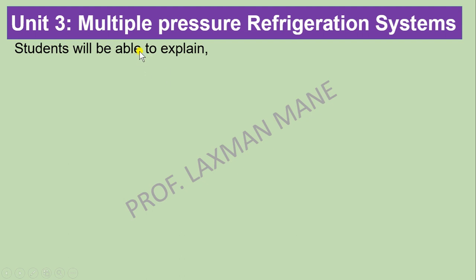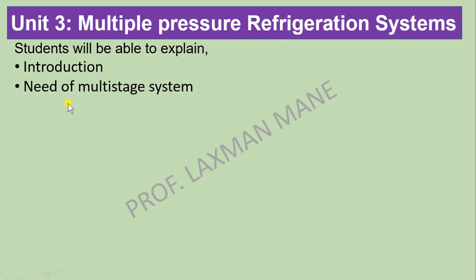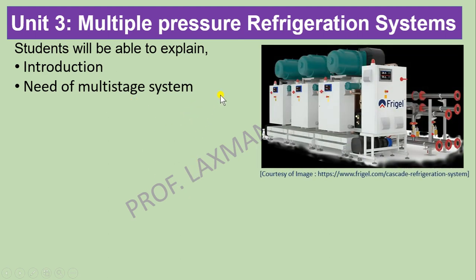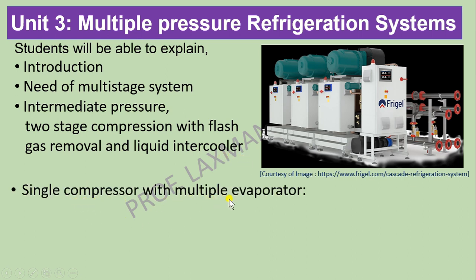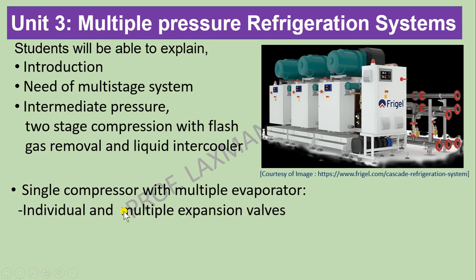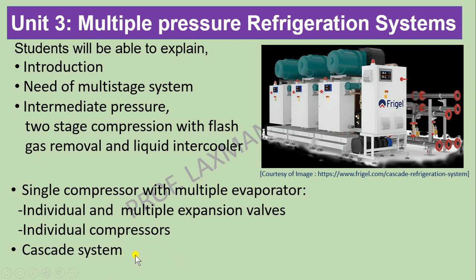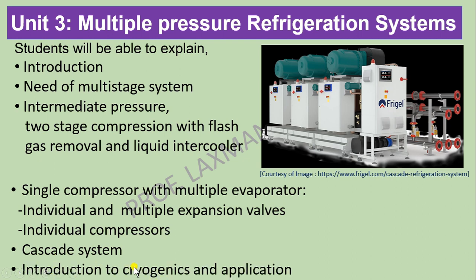The third unit is Multiple Pressure Refrigeration Systems. In this, the need for multi-stage systems is discussed. Multiple compressors are provided to increase the pressure of the system. Topics include two-stage compression with flash gas removal and liquid intercooler, single compressor with multiple evaporators with individual and multiple expansion valves, individual compressors, and Cascade Systems. A Cascade System is a combination of two Vapor Compression Cycles having different boiling points. Introduction to Cryogenics and its applications will also be studied.